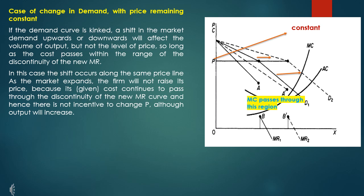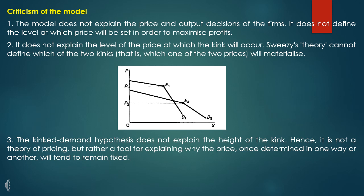Now let's see the criticisms of the model. First, the model does not explain the price and output decisions of the firm. It does not define the level at which price will be set in order to maximize profits. This model is not a theory of price determination. It does not explain the level at which the kink will occur.